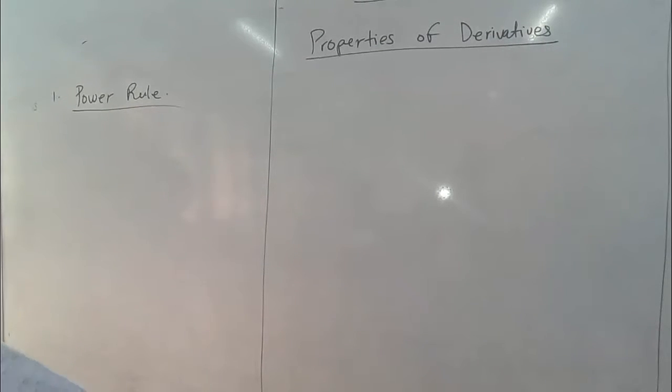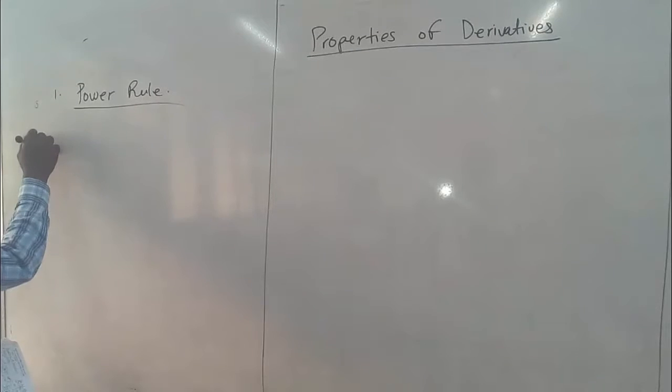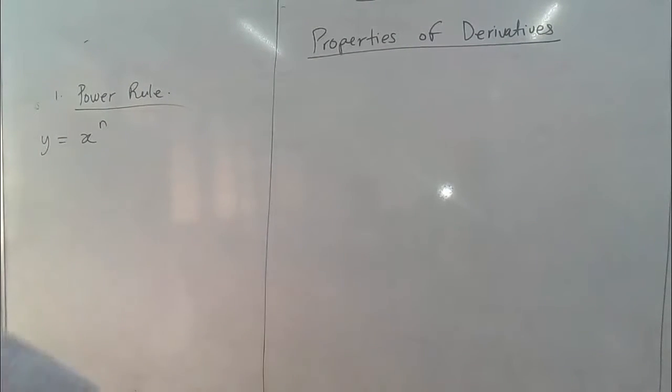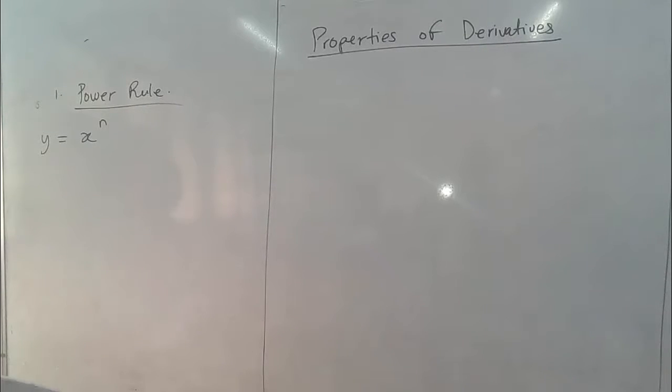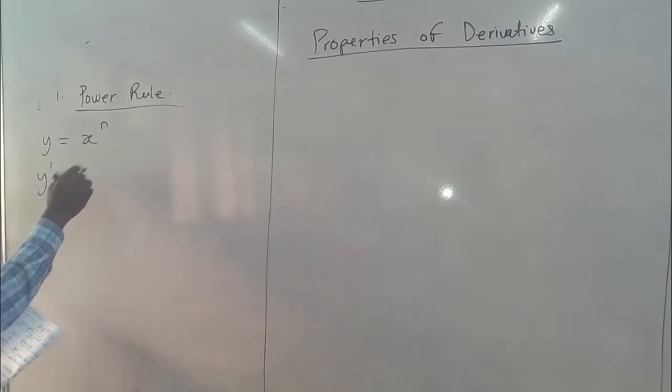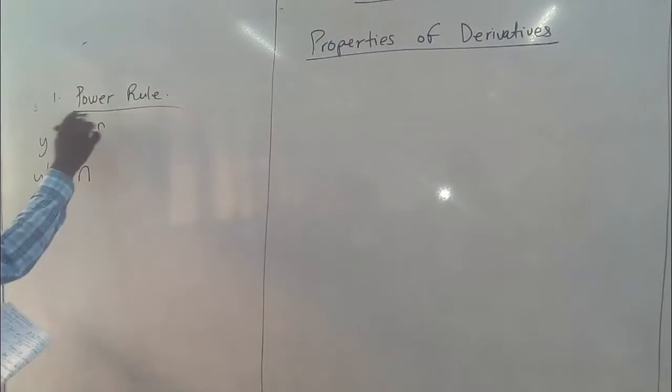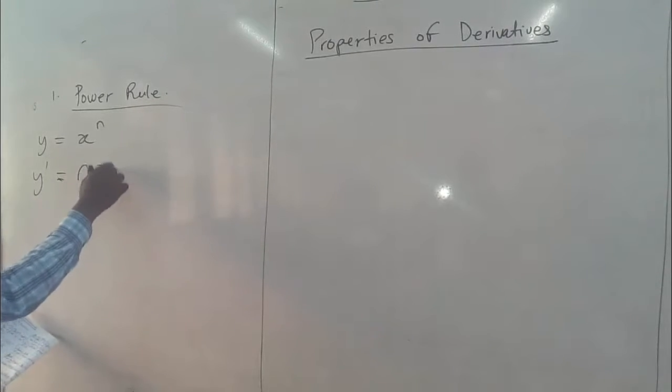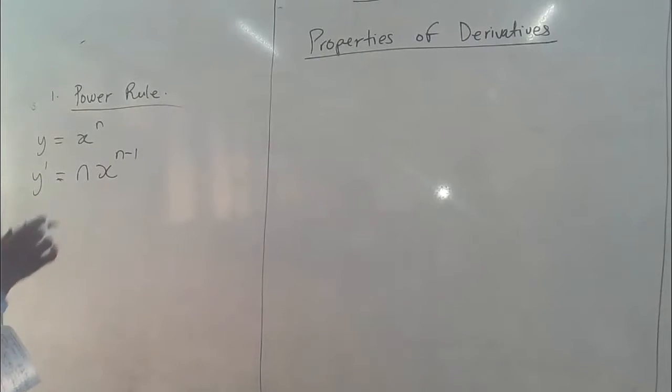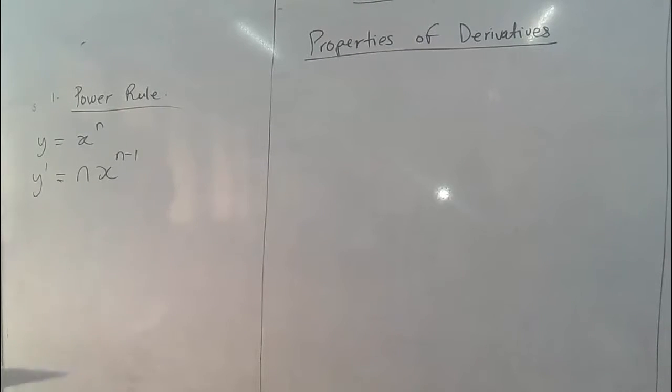Now the power rule tries to tell us that when we have any function, let's say y equals x to the power n, and we want to find a derivative, what are the processes that we pass through to get the derivative of y equals x to the power n? The derivative of this function, we write it as y prime, meaning first derivative, is given by multiplying the power by the expression here, then we subtract 1 from the power.